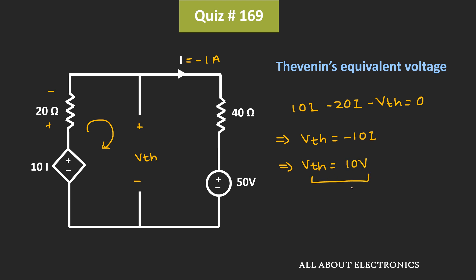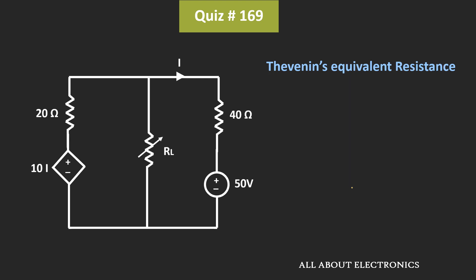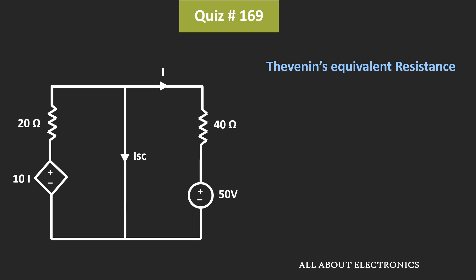Similarly, now let's find the Thevenin's equivalent resistance. To find it, let's short these two terminals and find the short-circuit current. Now to find the short-circuit current Isc, let's apply KVL in these two meshes. Let's say the current in the first mesh is I1 and the current in the second mesh is I2. From this, we can say that Isc is equal to I1 − I2.